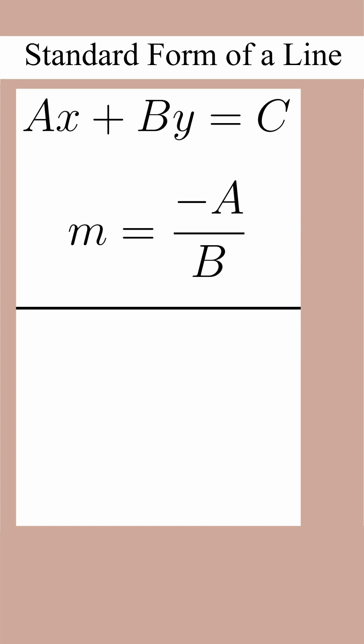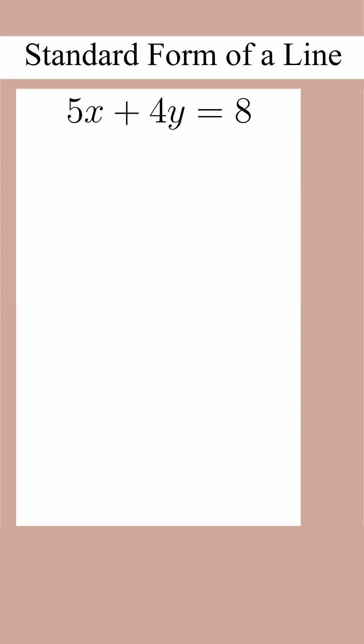And don't forget slope intercept form, which we covered in previous shorts. The easiest way to find the slope of a standard form line equation is probably to use algebra to put it in slope intercept form. To do that, we're going to try to get y by itself.